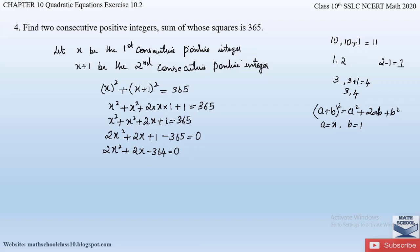We can see that 2 is common to all three terms, so dividing through by 2: x squared plus x minus 182 equals 0. This is the standard quadratic form ax squared plus bx plus c equals 0.